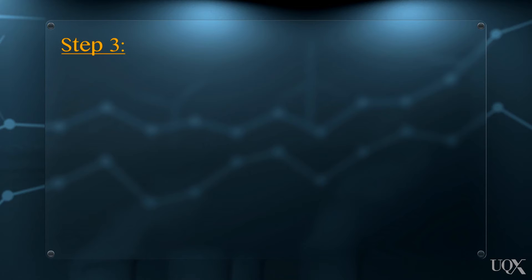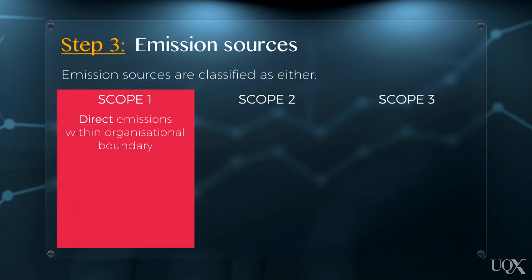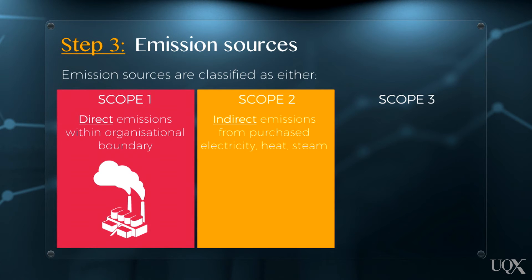Step three involves determining which emissions sources should be included in an organisation's carbon footprint. Carbon footprinting uses a system of emission scopes to determine this, where emission sources are classified as either Scope 1, Scope 2 or Scope 3. Scope 1 includes all emissions that occur within the organisational boundary as a direct result of a particular activity. For example, a power plant may directly produce Scope 1 emissions from its flue stack through the burning of coal. Scope 2 includes indirect emissions from purchased electricity, heat and steam. The difference is that Scope 2 emissions happen outside the facility's boundary as a consequence of that facility's activities.